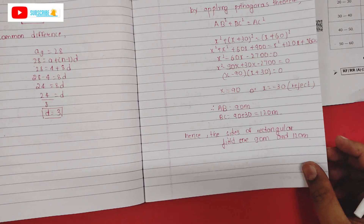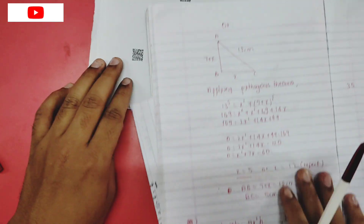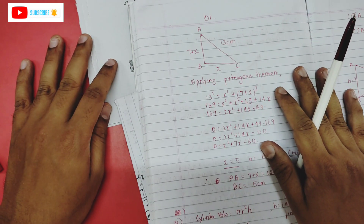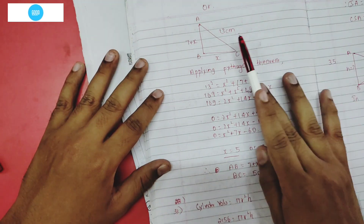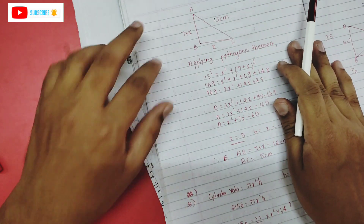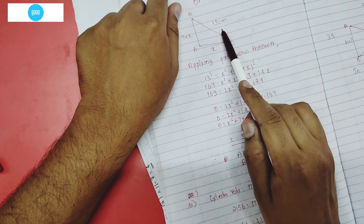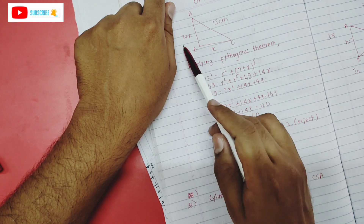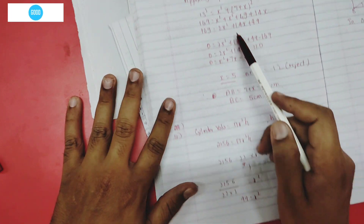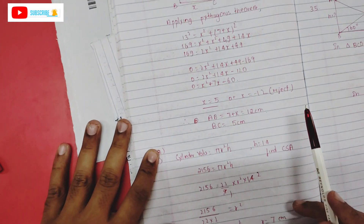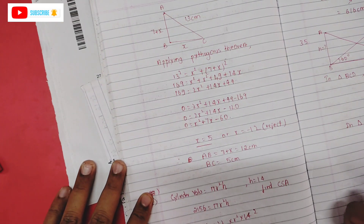The diagonal of a rectangular field is 60 more than the shorter side. Let shorter side = x. The longer side is 30 more. Apply the Pythagorean theorem. You get a quadratic equation — solve it. Reject the negative value, keep the positive. Answer: 120 and 90. Check using Pythagorean triplets. Answer: hypotenuse = 13, sides are 12 and 5 (or 7 more).